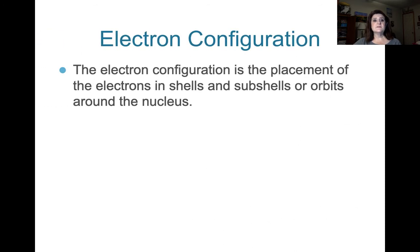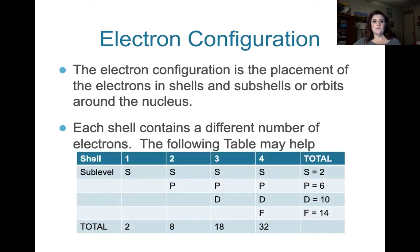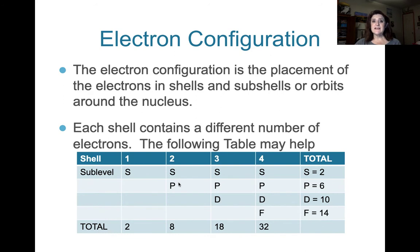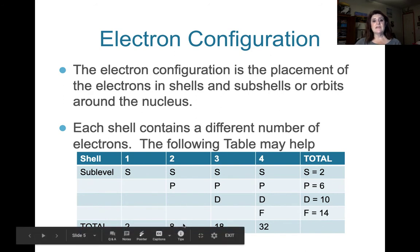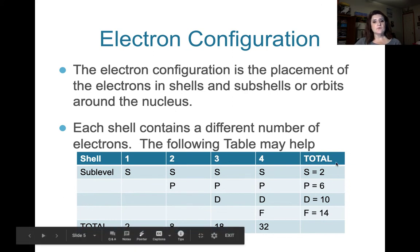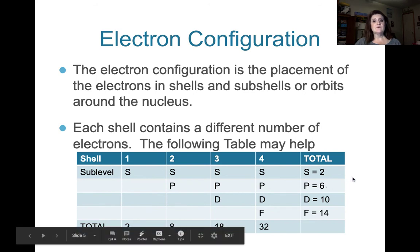So electron configuration is the placement of electrons in shells and subshells, or orbits, around the nucleus. And each shell contains a different number of electrons. This table may be helpful because shell 1 has an S sublevel, which is a total of 2. Shell 2 has the sublevels S and P, or sections S and P, and they have a total of 8. On the back of your periodic table, next to the electron configuration map, you are going to want to write these totals, S equals 2, P equals 6, D equals 10, and F equals 14.